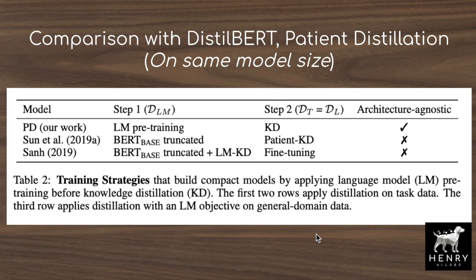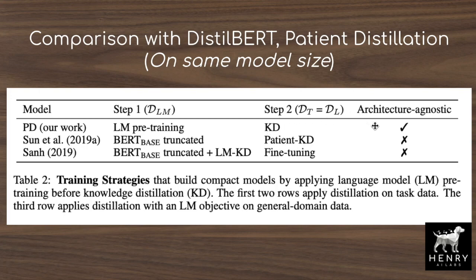These are the key differences between pre-trained distillation and the other methods. Patient KD and DistilBERT both initialize by copying weights from the teacher network — BERT-base truncated, taking every other layer. DistilBERT also does language modeling knowledge distillation from the teacher. Pre-trained distillation instead first does language model pre-training with the student network, then in step two does knowledge distillation with the fine-tuned teacher on labeled data D_L. Patient KD also adds intermediate activation distillation, while DistilBERT goes directly from language modeling distillation to fine-tuning on the supervised labeled dataset.